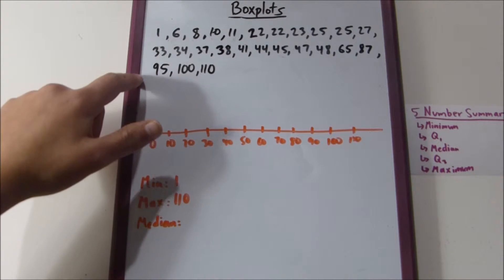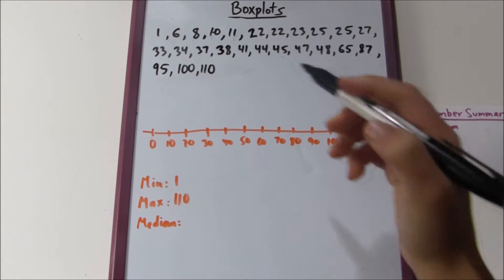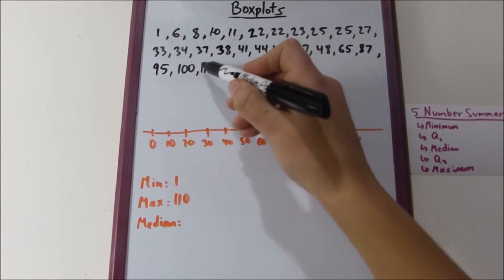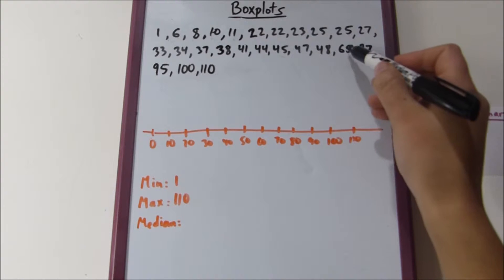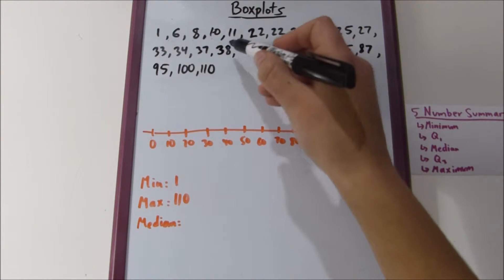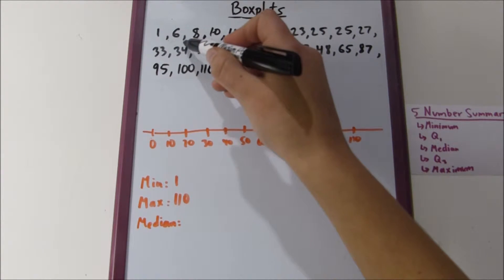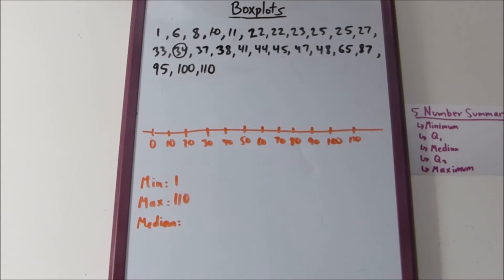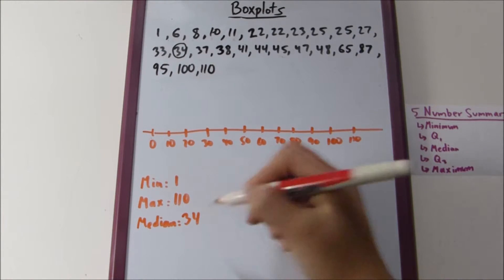Since we know that there's twenty-five numbers in this sample, we should count twelve from the right. One, two, three, four, five, six, seven, eight, nine, ten, eleven, twelve. And then this number should be our median, thirty-four.